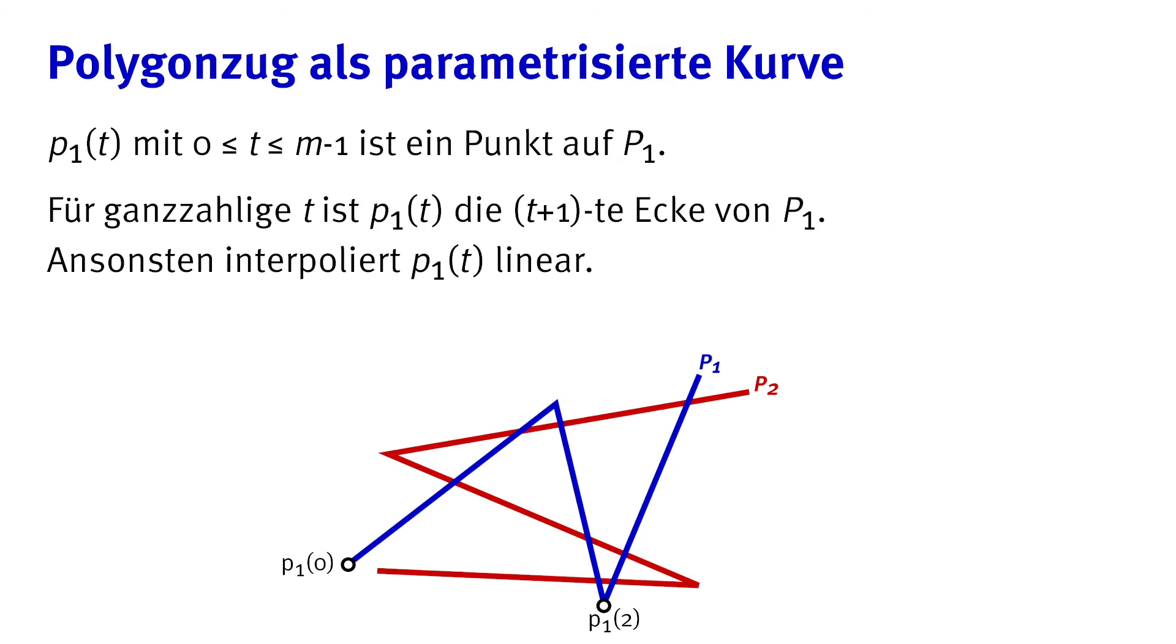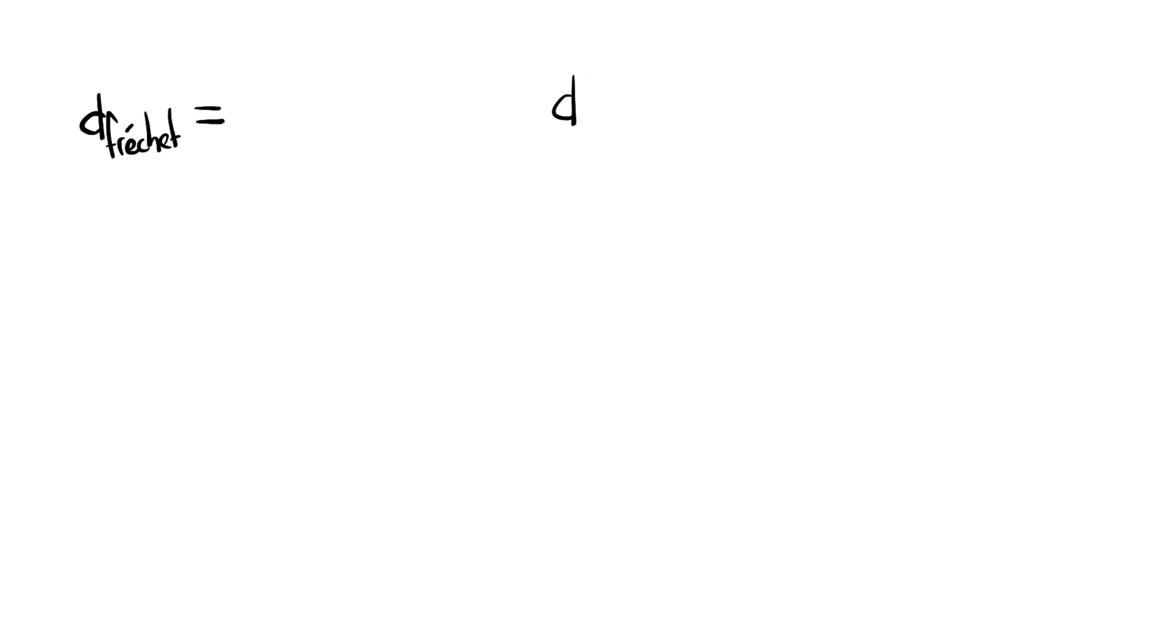We start with this distance function d which is the Euclidean distance as usual and then we throw in a point from the one polyline and one from the other but re-parameterized by these functions alpha and beta. These will decide how the man and the dog walk along the polyline. Let's arbitrarily say that the argument to alpha and beta goes from 0 to 1.